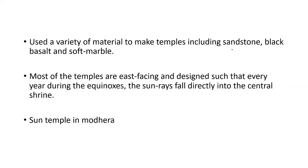The materials used for constructing these temples vary by region: sandstone is used in the western part of Madhya Pradesh, black basalt is used in the northern part of Gujarat, and soft marble is used in the southwest part of Rajasthan. So multiple materials — sandstone, black basalt, and soft marble — were used in the construction of Solanki school temples.